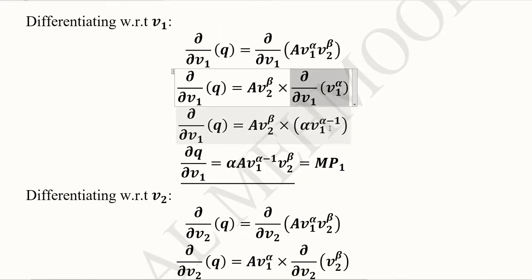Once we do this, we can rearrange it where alpha comes in the beginning, then the constant A, then V1 term and V2 term. This is MP1 because this is the derivative of the production function with respect to V1.